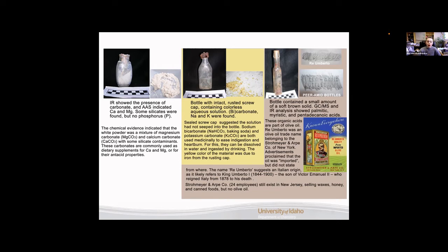For our second one, we have a really unique opportunity to analyze this one because we have a rusted screw cap that was still intact. When you get a vial like this with the cap still intact, it's really exciting because the material inside is likely almost identical to what it was years ago when it was originally sealed. The liquid inside the bottle was a colorless aqueous solution and carbonates and sodium and potassium were found in there. So sodium bicarbonate, which is just commonly referred to as baking soda, and potassium carbonate are both used medicinally to ease indigestion and heartburn. For this to be done, they're usually dissolved in water and then ingested by drinking it. This yellow color that we see in the powder was likely not in there originally, but originates from the iron, from the rusted screw cap seeping into the liquid.